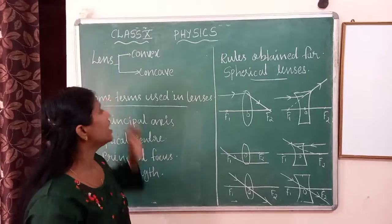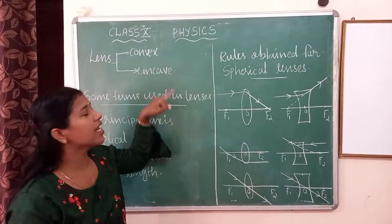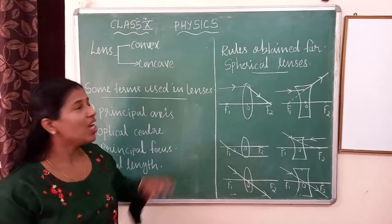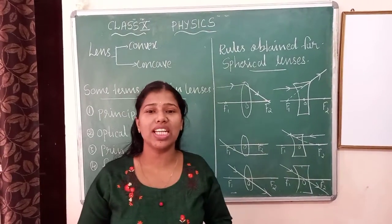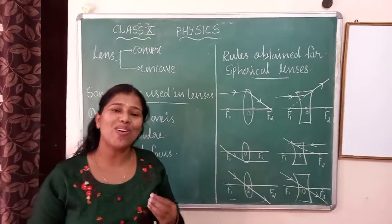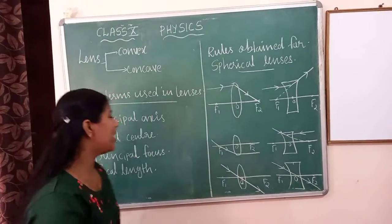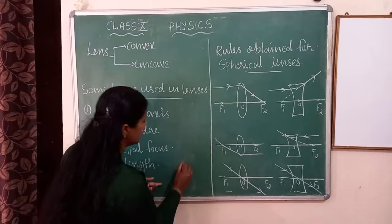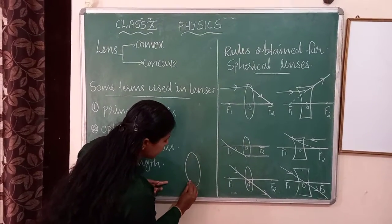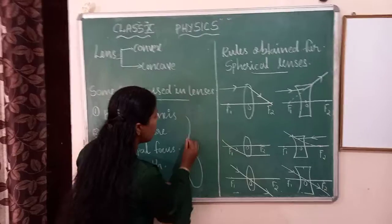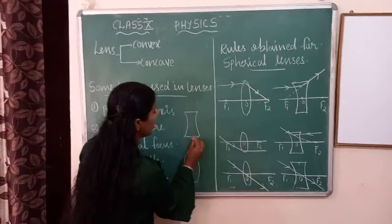We know that lenses are of two types. First one is convex lens, second one is concave lens. Convex lens is also known as converging lens. Concave lens is also known as diverging lens. This is how we draw a convex lens, and this is how we draw a concave lens.